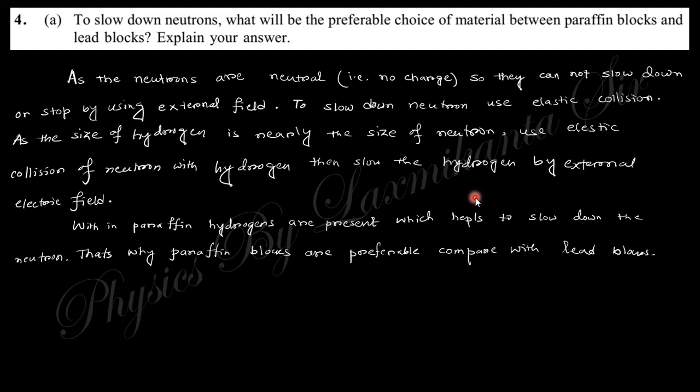For elastic collision to be most effective, the masses of the two colliding particles should be nearly equal. Therefore hydrogen, whose mass is nearly equal to that of the neutron, is the most preferable collision partner. Paraffin contains a large amount of hydrogen, which is why paraffin block is more preferable than lead block for slowing down neutrons.